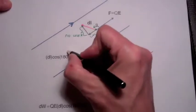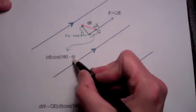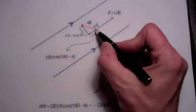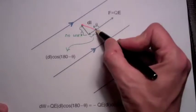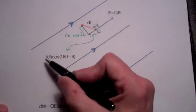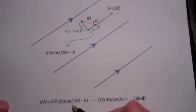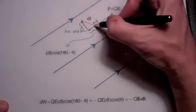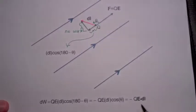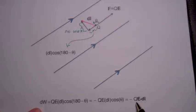So this length here is given by DL times the cosine of 180 minus theta. The work done is the force being applied along this length — Q times E, because you have to overcome the force of the electric field — and the distance is DL cosine of 180 minus theta. Now, cosine of 180 minus theta is minus the cosine of theta. We can recognize that the magnitude of the electric field times the magnitude of DL times the cosine of the angle between them is just the dot product of the electric field and DL. So the differential work is minus Q times the dot product of the electric field and our differential displacement DL.